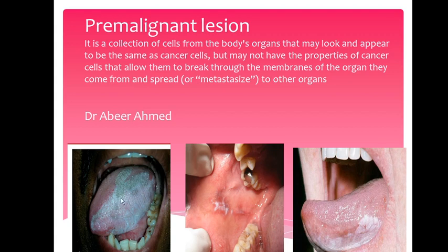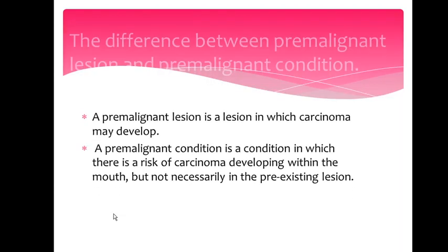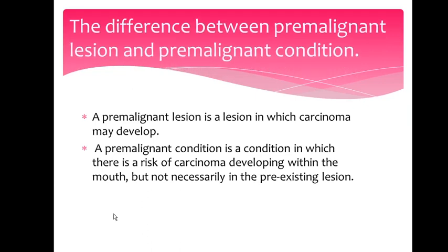Here we can see the sites: this is the lateral border of the tongue on the side, and here on the cheek you can see a white patch. When you rub it, it cannot be removed — it doesn't come off. We're going to talk about the difference between pre-malignant lesion and pre-malignant condition.